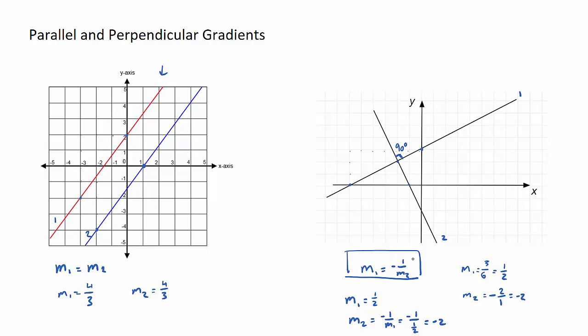So this is the key relationship for perpendicular lines. The gradients will be a negative reciprocal or minus one on the other one. That's a brief overview of the gradients of parallel and perpendicular lines. I recommend now practicing some of these questions.